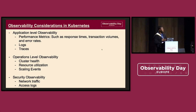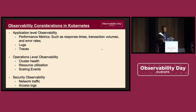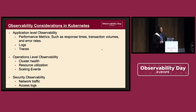For the application level, we're talking about things like performance metrics, logs, and traces. For the operational level, in a Kubernetes context, we're talking about cluster health, resource utilization, scaling events, et cetera. For security observability, we're talking about network traffic and access logs. These are some of the things we consider when talking about observability in the cloud-native space.